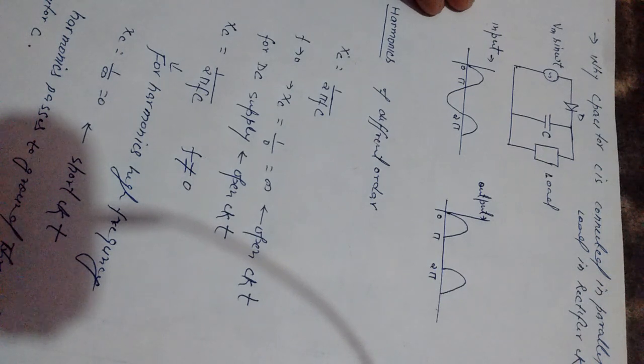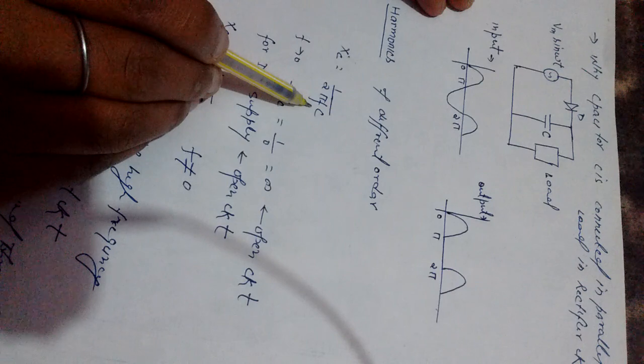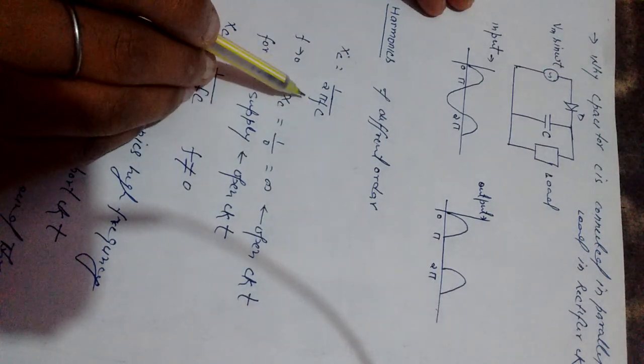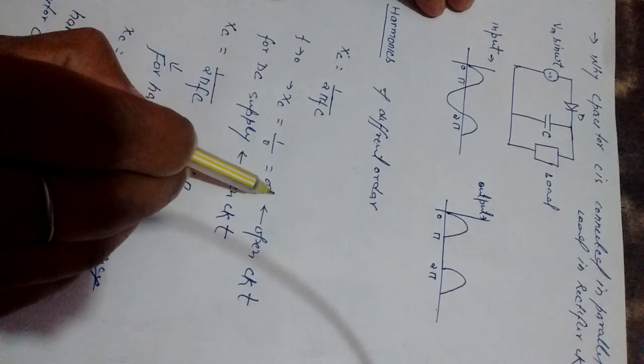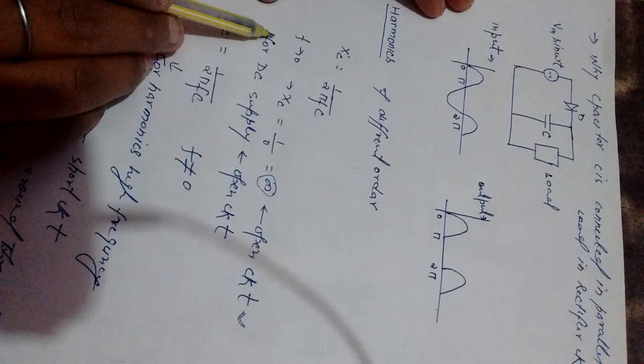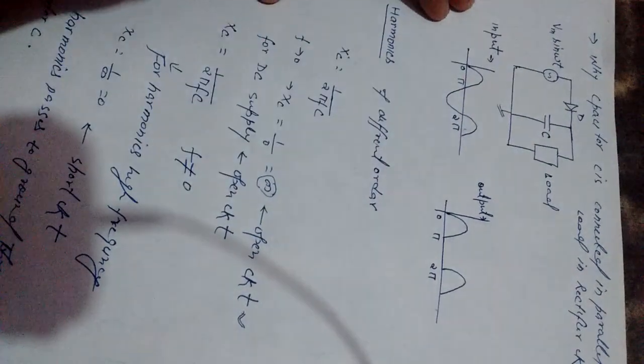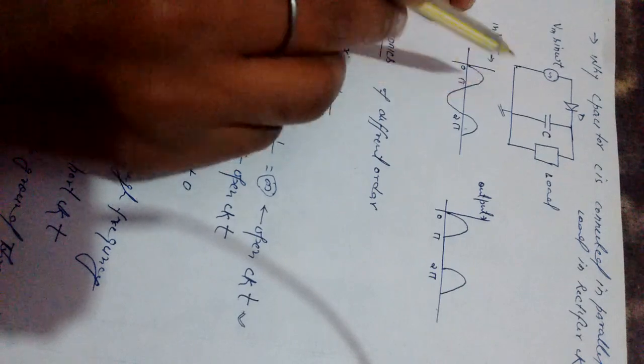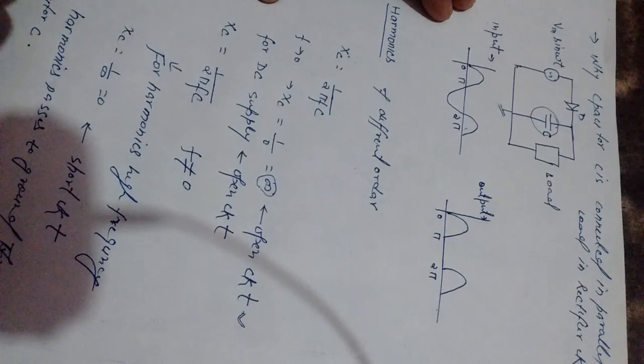To avoid this we have to connect a capacitor in parallel to the load. Actually, a capacitor gives Xc equal to 1 upon 2πfC. When f is zero for DC, then this Xc gives impedance infinite. It means it works as an open circuit only for DC. It means DC cannot pass to ground because the capacitor blocks DC.